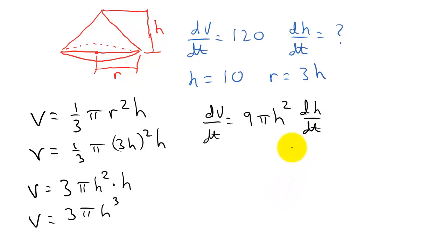Now, what are we looking for? We're looking for dh dt. So I'm going to solve this for dh dt. So if I divide everything by nine pi h squared, I get dh dt is equal to one over nine pi h squared times dv dt.